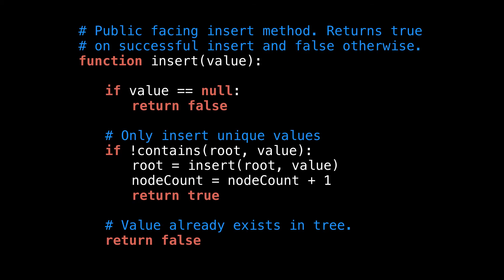If the node is not null and it doesn't already exist in the tree, we call our private recursive insert method, where we pass in a pointer to the root node and the value we want to insert.